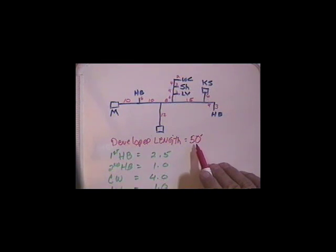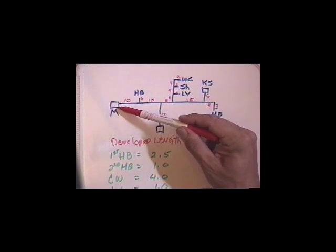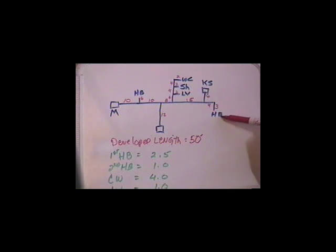So my addition adds up to 50 feet. In the developed length, we don't consider the branch length, we only consider the distance from the meter through the most remote outlet, and it happens to be this hose bib. So the developed length is 50 feet. That's important.